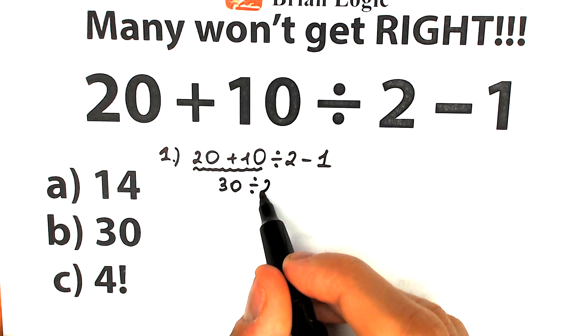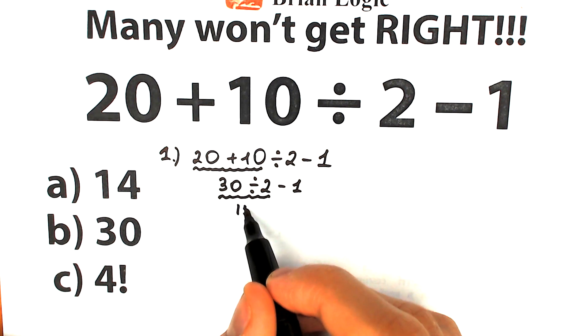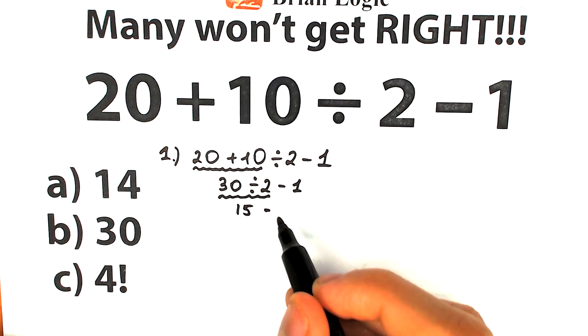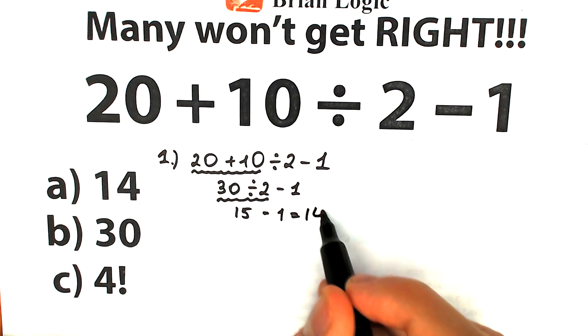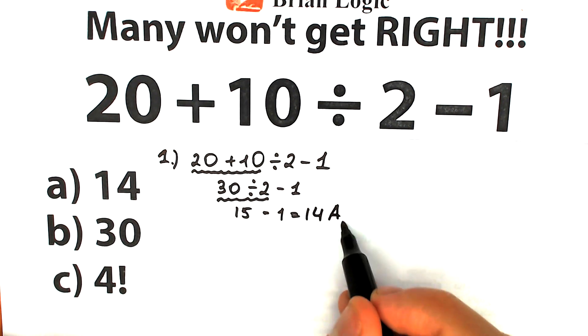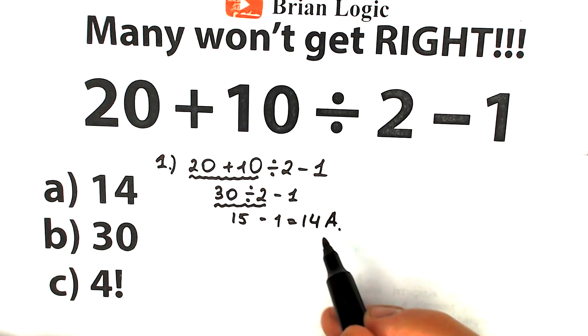We have 30 divided by 2 minus 1. Right here with this division we have 15 and we subtract 1 from here. So as a result we have 14. This is option A. So a lot of students solve this question like that. They say that correct answer to this challenge is 14.